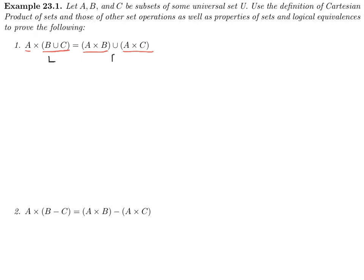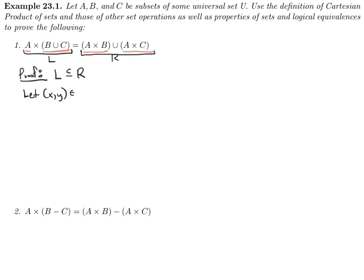There are going to be two different proofs we're going to have to do. I'm going to call this the left side and this the right side just to make my life a little bit easier. Let's do the first direction. Let X comma Y be an element of A cross B union C, since we know it's an ordered pair.